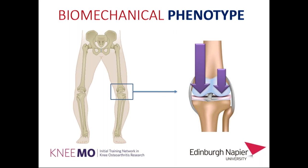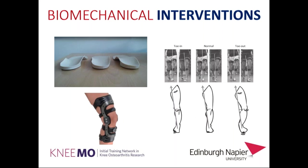This biomechanical phenotype is characterized mainly by malalignment. Knee alignment is the main factor responsible for load distribution between the medial and lateral compartment. Varus malalignment — the most common malalignment in knee osteoarthritis — has been hypothesized to produce higher load on the medial compartment, driving disease in the medial compartment. To target these patients, biomechanical interventions have been developed, including lateral wedged insoles, knee bracing, and gait modifications.